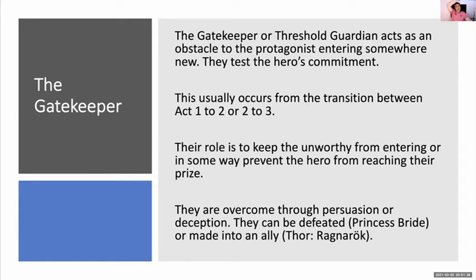Macbeth is the less fashionable hero's journey — the one without a happy ending. But one of the greatest stories, where a good person becomes bad. Breaking Bad: Mr. Chips becomes Don Corleone. The next one I want to talk about is the gatekeeper, sometimes called the threshold guardian. They act as an obstacle to the protagonist entering somewhere new — they test the hero's commitment. It's another way of creating tension or conflict in your story by putting another obstacle in their way.